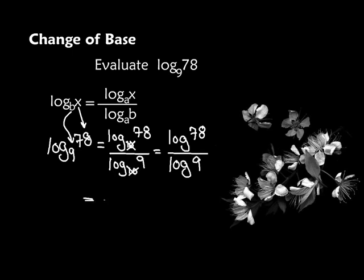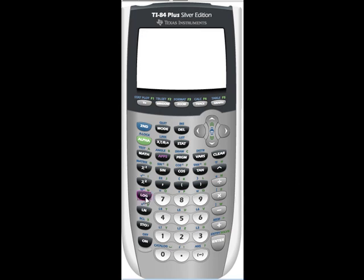When I do that on my calculator, I get an answer of 1.98 and a whole bunch more numbers. It's really up to your instructor how far they want you to round, but I'm only going to round to two decimal places: 1.98. Now let me show you how to do that on your calculator. Press your log key, then put 78, end parentheses. We don't need to put a base in there because our base is assumed to be 10 — that's why we did the change of base formula. Divided by log of 9, end parentheses, and enter. And there's your answer.